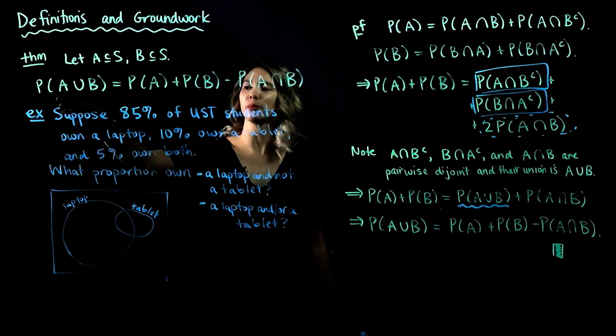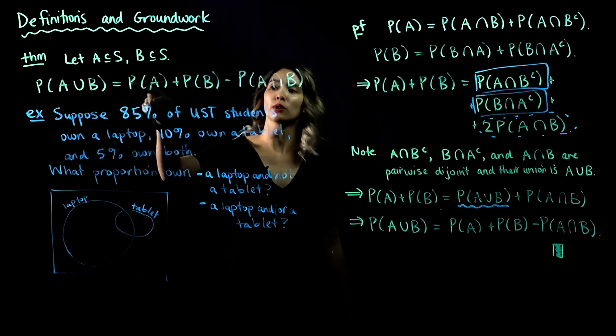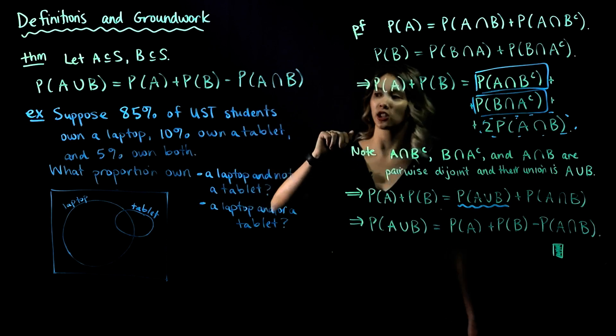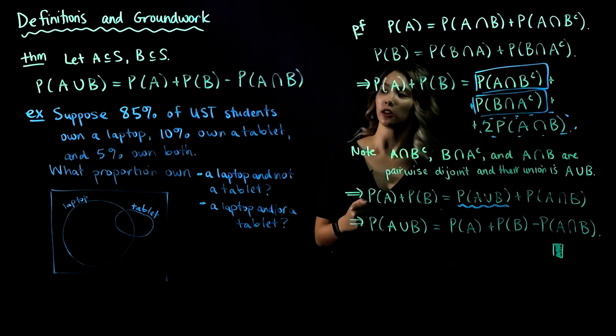Now that we have proven this theorem that says, for any two events in S, the probability of A union B equals the probability of A plus the probability of B minus the probability of the intersection. Now that we've proven that, let's go ahead and actually use that a little bit.